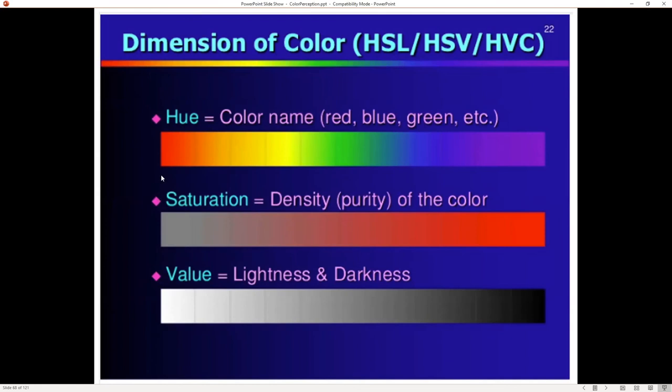Here's another way just to show what these meanings are. So hue is which name color you want to have. Saturation is going from gray or white towards the pure color, if you want to say it that way. And value is the lightness or darkness. HSV.